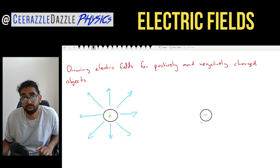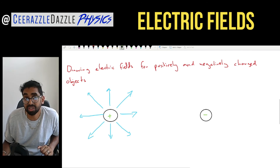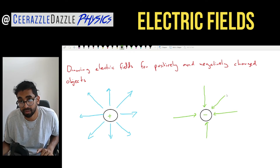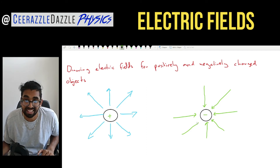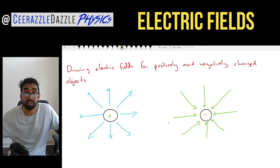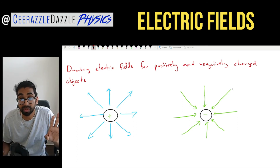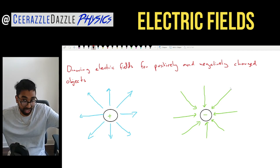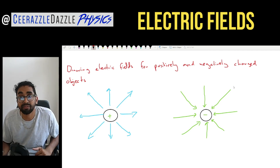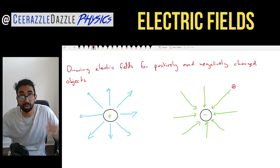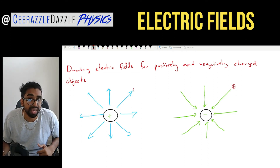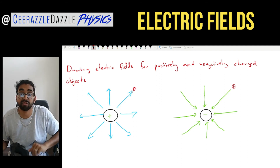For the negatively charged particle, the arrows are going to flip direction — the arrows go into it. The reason why the arrows go into the negatively charged object: if I was to place a positively charged object there, it would move towards the negative. Why? Opposites attract. That's the reason why the arrows go inwards, while for the positive it would be repelled away.